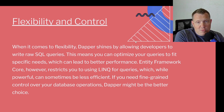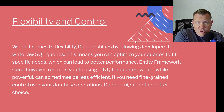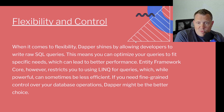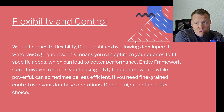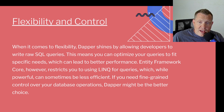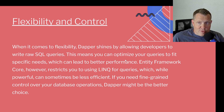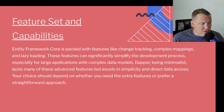When it comes to flexibility and control, Dapper shines by allowing developers to write raw SQL queries. This means you can optimize these queries to fit specific needs, which can lead to better performance. Entity Framework Core, however, restricts you to using LINQ for queries, which while powerful, can sometimes be less efficient. If you need fine-grained control over your database operations, Dapper might be the better choice. I often see junior developers use LINQ and pull back entire datasets, then continue chaining LINQ queries off of them — bringing back way more data than they need, leading to really poor performance. Whereas with SQL, you see exactly what you're getting. You can write it in a tool like Microsoft SQL Server Management Studio or DataGrip, get your query really tuned and optimized. That's where I really like the flexibility that comes with Dapper.